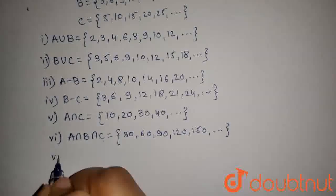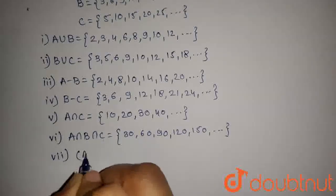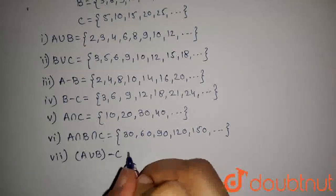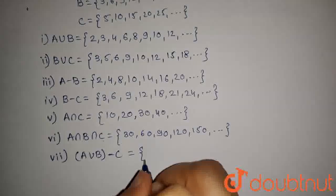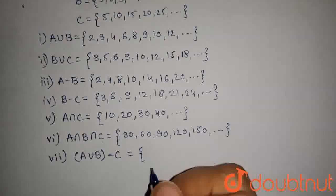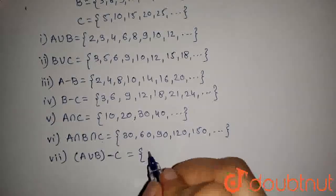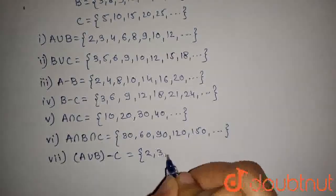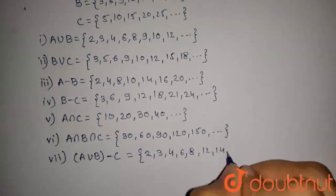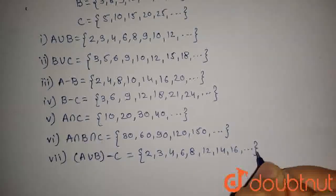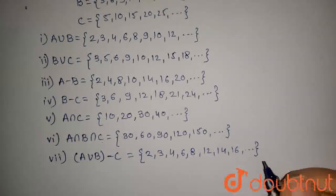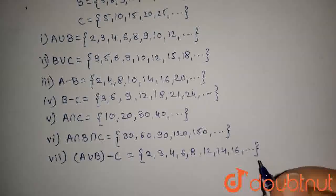The last part is to find A union B minus C. A union B minus C will contain natural numbers which are multiples of 2 or 3 but not a multiple of 5. So in this set the elements will be 2, 3, 4, 6, 8, 12, 14, 16, and so on. Elements 5, 10, 15, 20, 25, and 30 are excluded because they are multiples of 5.